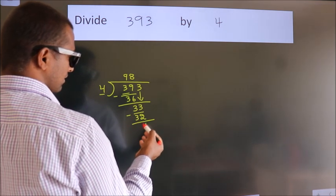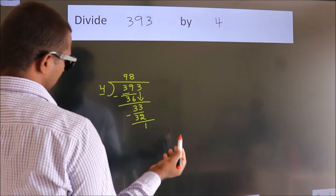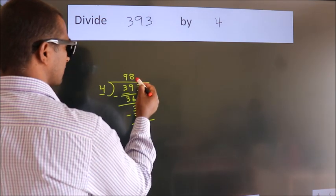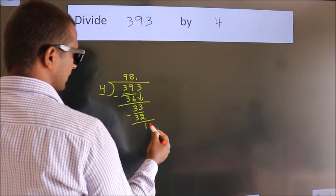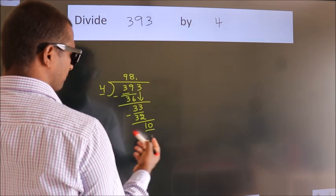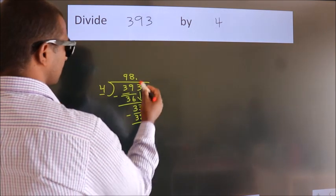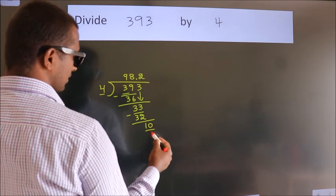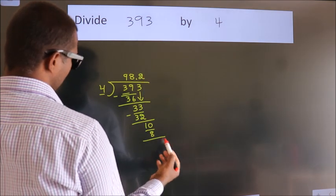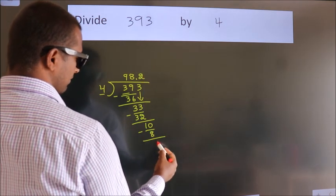After this, no more numbers to bring it down. So, what we do is, we put dot take 0. So, 10. Then, a number close to 10 in 4 table is 4 2s 8. Now, we subtract. We get 2.